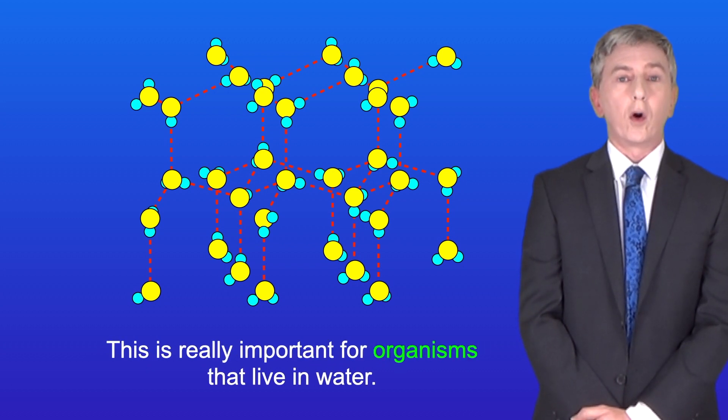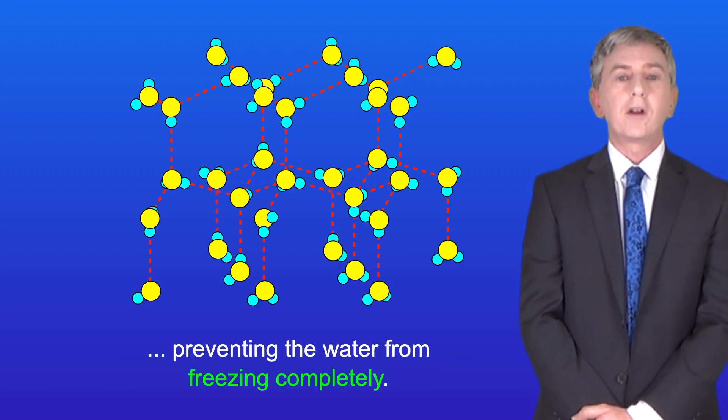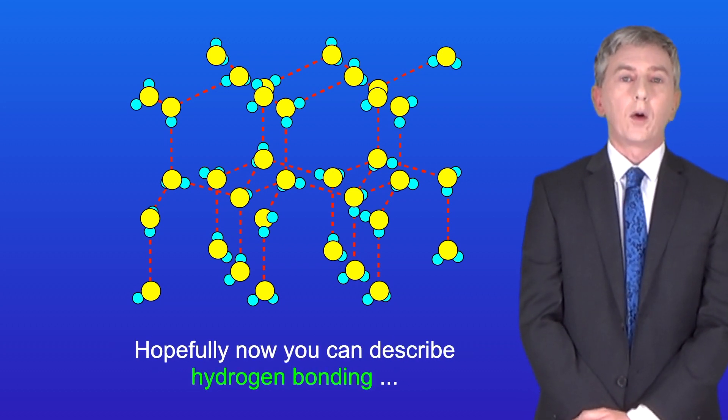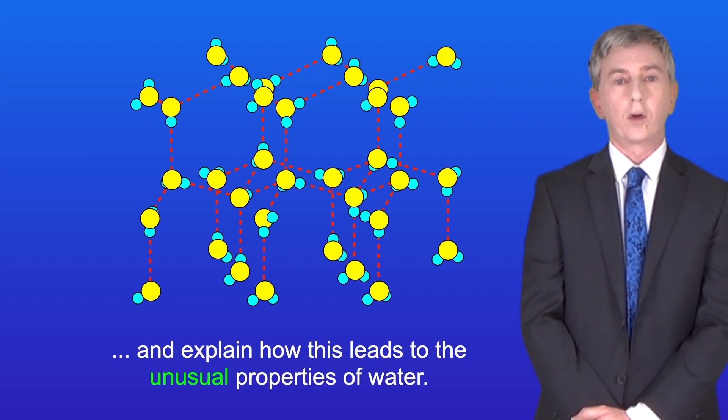This is really important for organisms that live in water, and that's because the ice insulates the water below, preventing the water from freezing completely. So hopefully now you can describe hydrogen bonding and explain how this leads to the unusual properties of water.